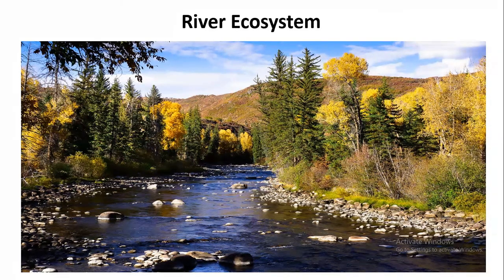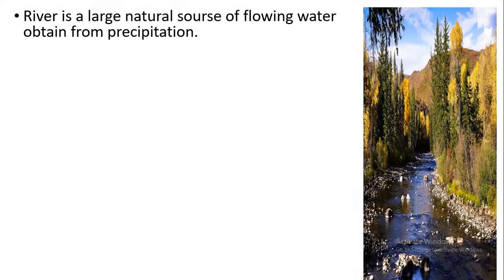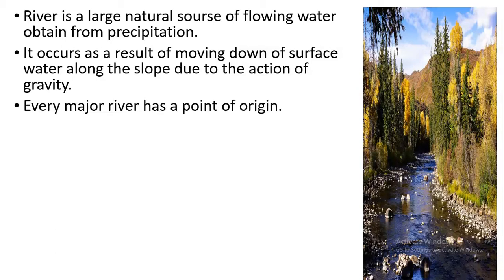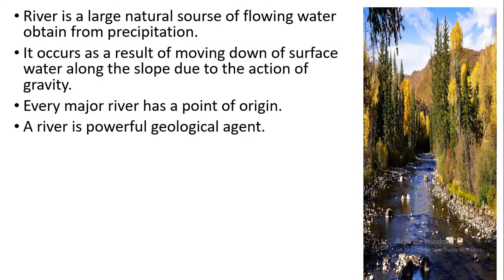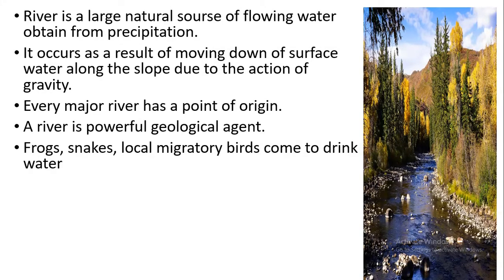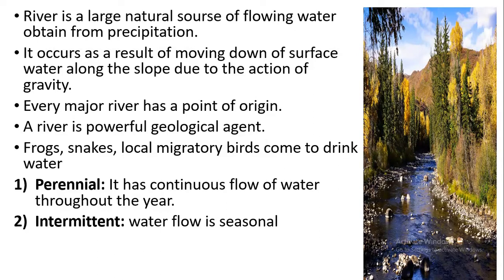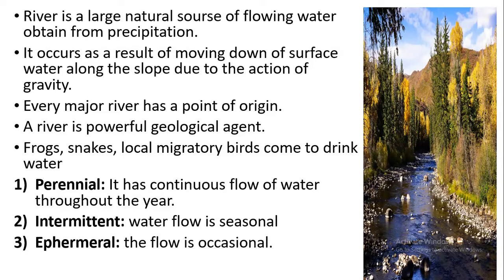Next we will study the river ecosystem. A river is a large natural source of flowing water obtained from precipitation. It occurs as a result of surface water moving down a slope due to gravity. Every major river has a point of origin. Rivers are powerful geological agents, and many animals come to rivers to drink water. Rivers are divided into perennial, intermittent, and ephemeral rivers.